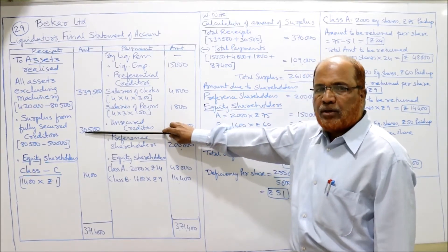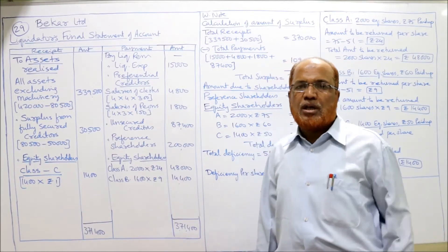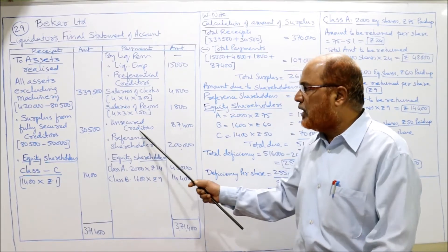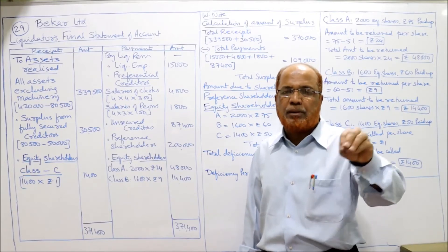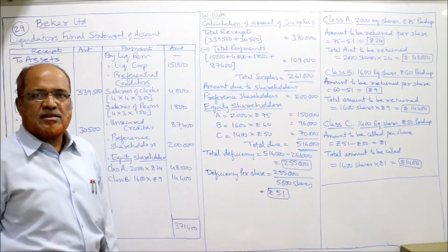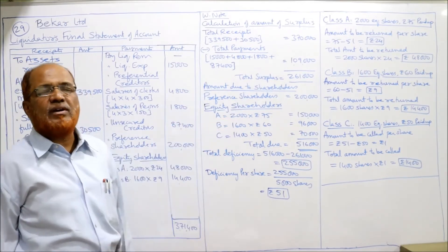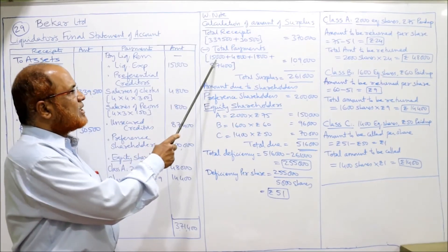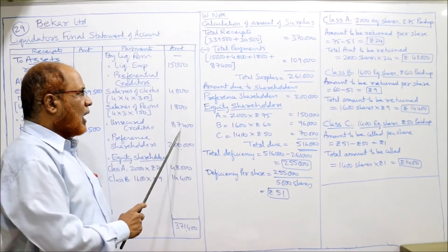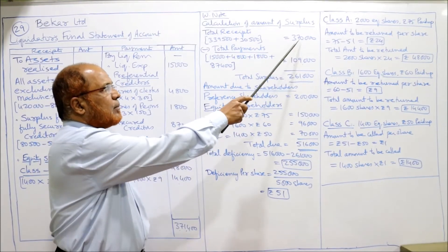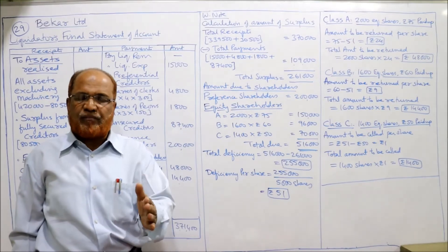After completing the working notes, we find how much is paid to preference shareholders and equity shareholders. The company is solvent with sufficient funds to pay unsecured creditors fully. Calculation of surplus: total receipts are 3,39,500 plus 30,500 = 3,70,000. Total payments: liquidation expenses 15,000, preferential clerks 4,800, preferential peons 1,800, unsecured creditors 87,400 — total payments 1,09,000. So surplus remaining for shareholders is 2,61,000.